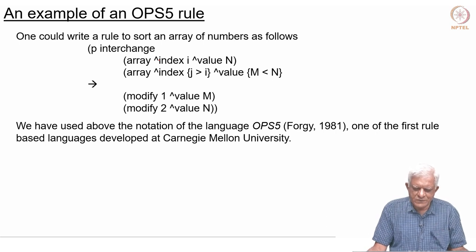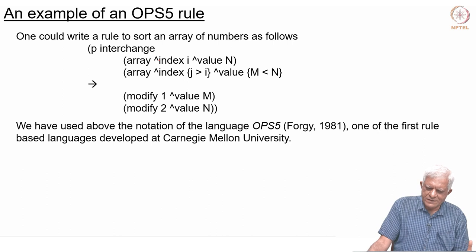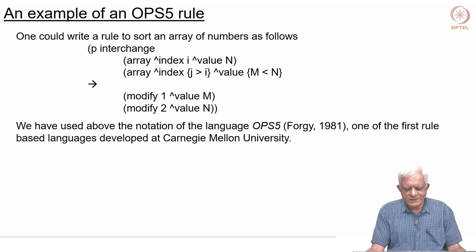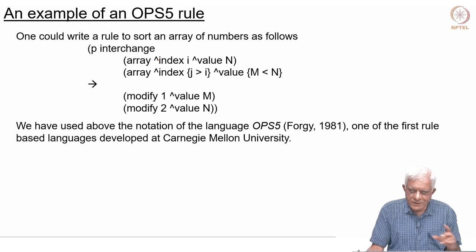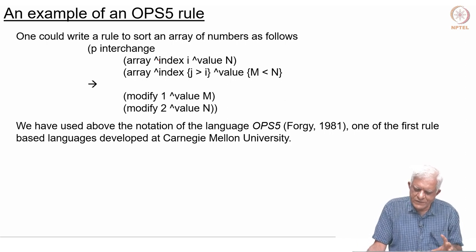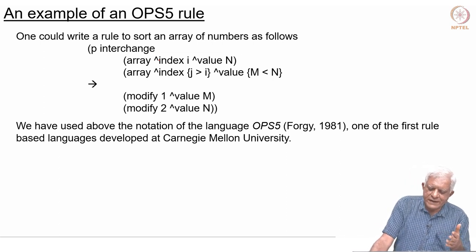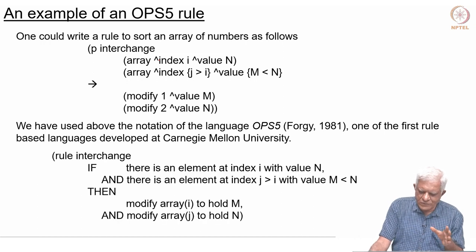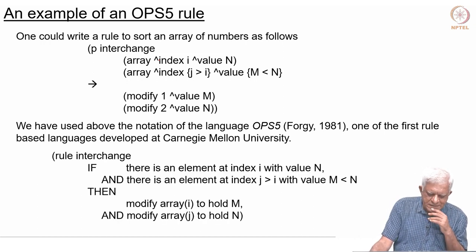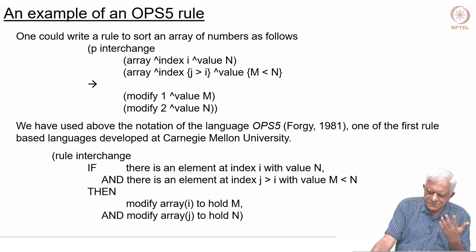Here is an example of a rule in a language called OPS5, which was somewhat ambitiously named the Official Production System Language. It came out of CMU, where some of this work was done, by Charles Forgy, whose work we will see later in the course. We are just looking at the nature of a rule here.